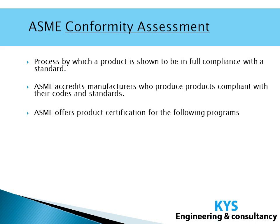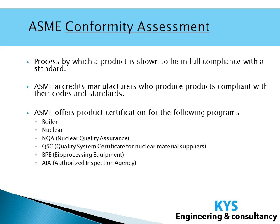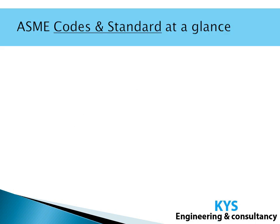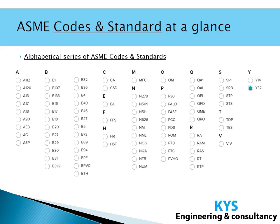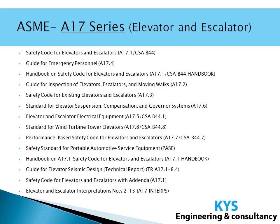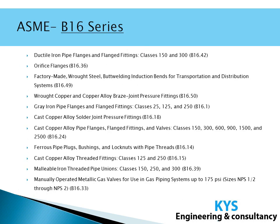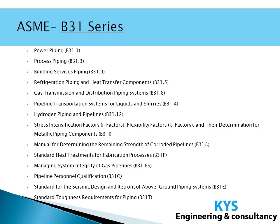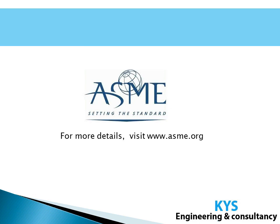ASME also offers product certification for various listed programs. This is the mission and vision of ASME as per their official website. Looking at ASME codes and standards at a glance — if you visit the ASME website, you will find an alphabetical series of ASME codes and standards: series A, B, C, D, E, F, H, and so on. There is the A17 series used for elevators and escalators, and the B31 series, among many others. For more details, you can visit the official website of ASME at www.asme.org.